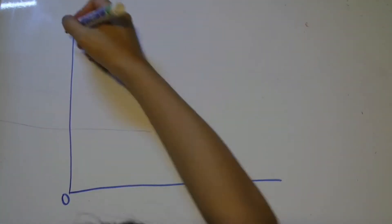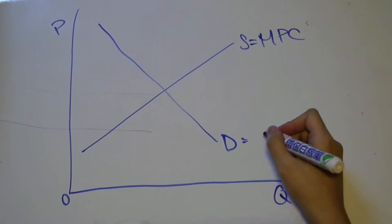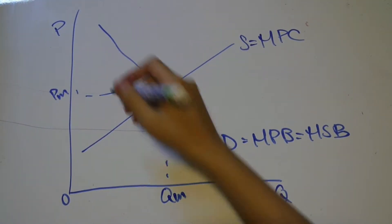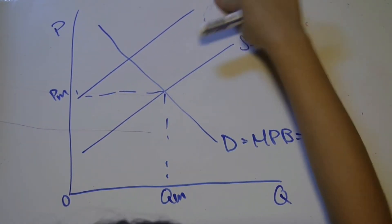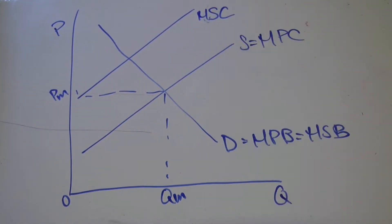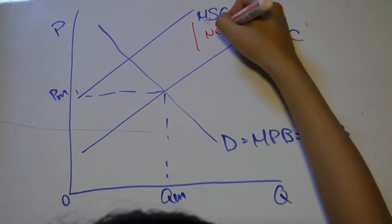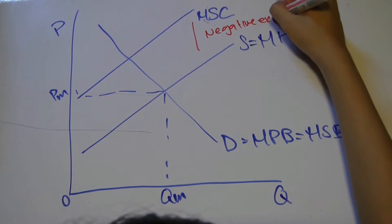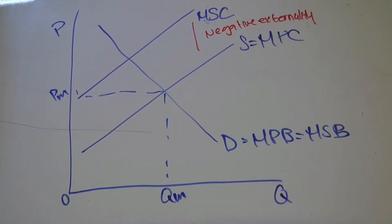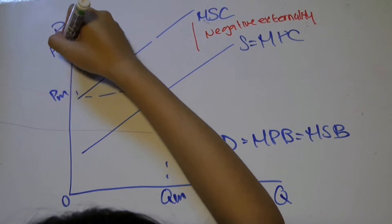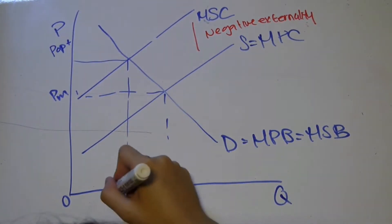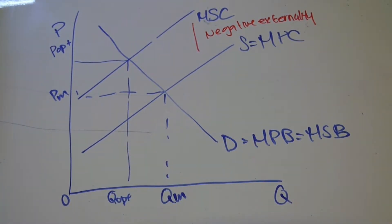When governments impose a tax on pollution, the optimal policy is to impose a tax that is exactly equal to the external cost, so the MPC curve shifts upward until it overlaps with MSC. The new after-tax equilibrium is given by the intersection of MSC and the demand curve, resulting in the lower optimal quantity of the good Qopt and a higher optimal price Popt.